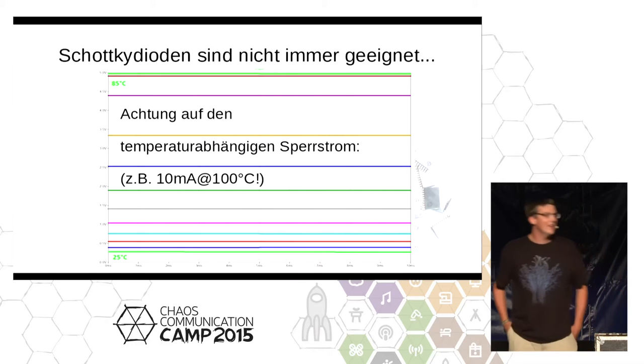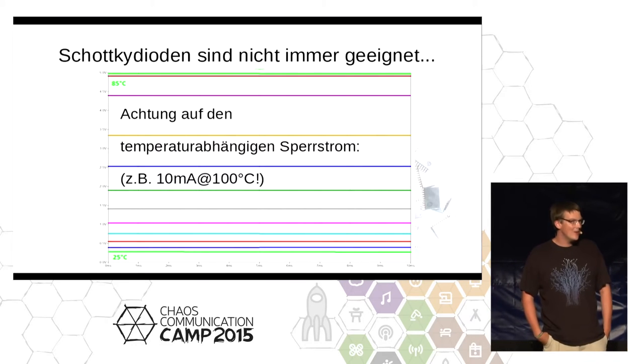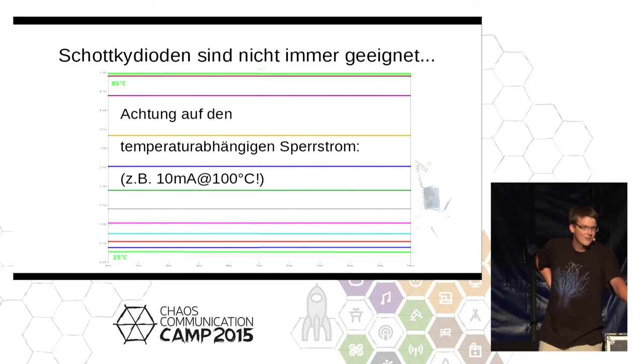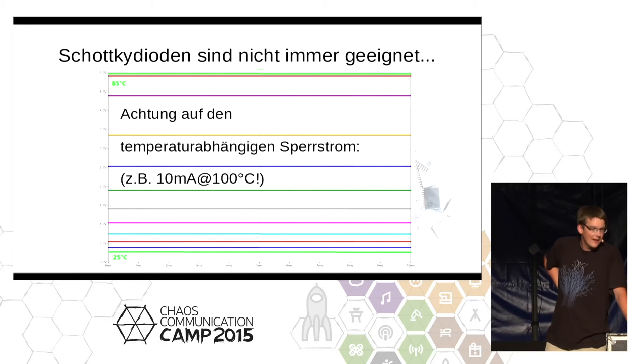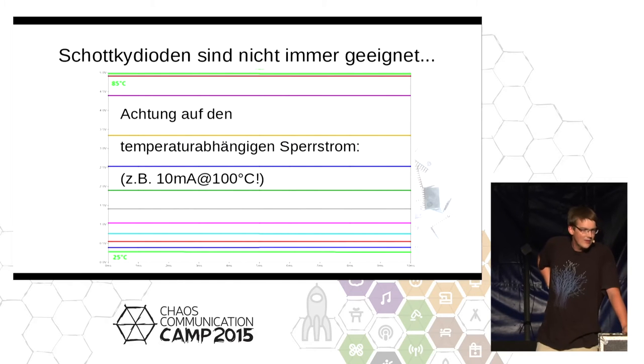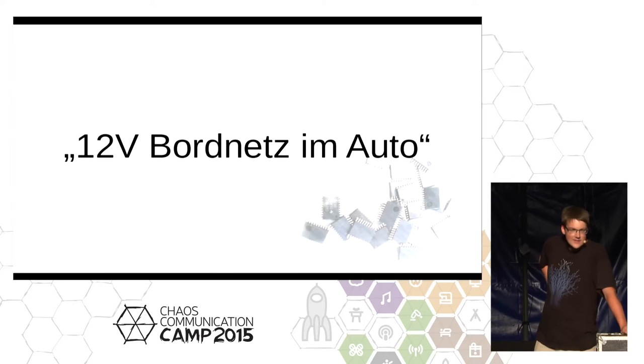These Schottky diodes have about half the forward voltage loss of typical diodes. So with clean 5V VCC, how much is the output voltage after the diode? It depends on temperature. Schottky diodes have a temperature-dependent reverse leakage current. If you heat the device, it can happen that 10 milliamps flows in the wrong direction — where the diode should have been blocking. So you get a nice little voltage gradient. If you then try to run a USB application or something, you'll have a lot of fun.